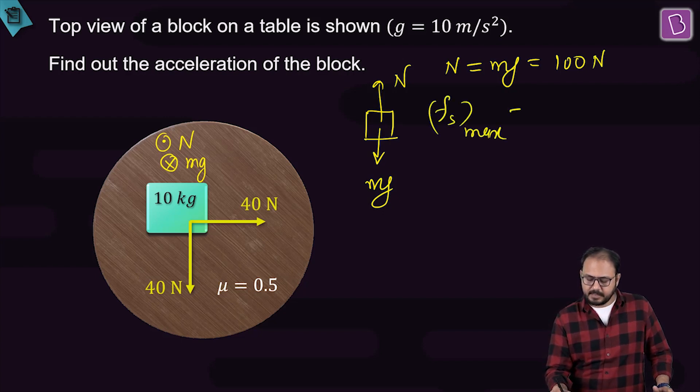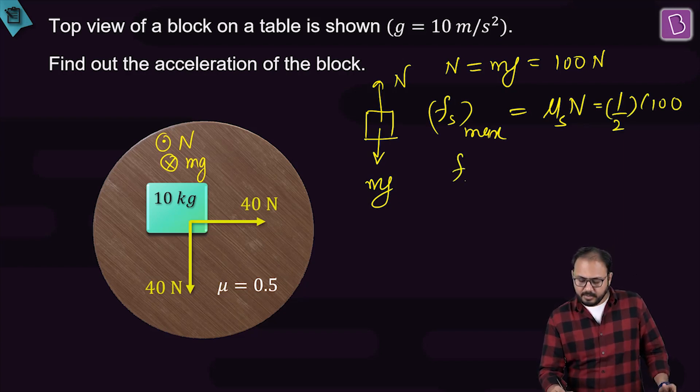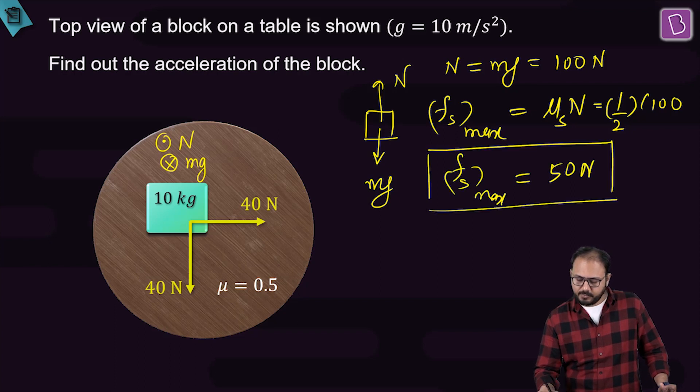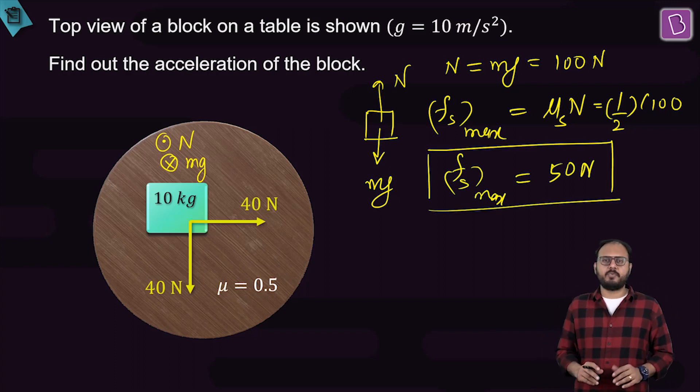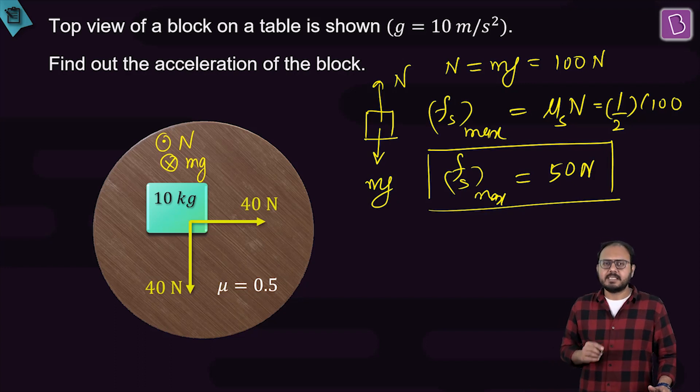fs max equals mu s times N. There's only one mu here, 0.5. Can I write 0.5 as half? What is the normal reaction? 100. So fs max equals 50 newton. Any questions up till now?